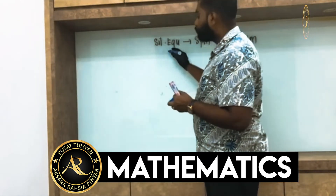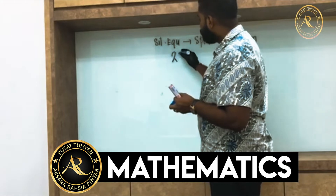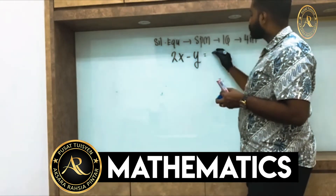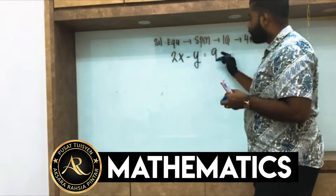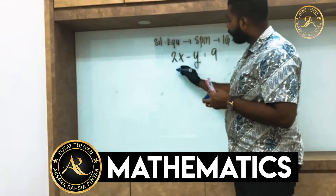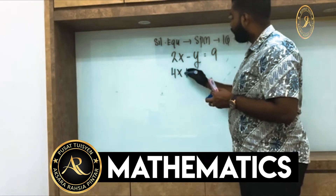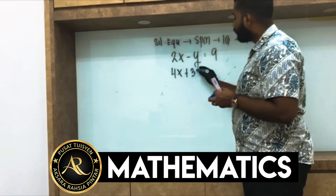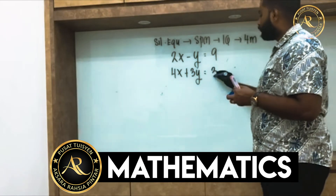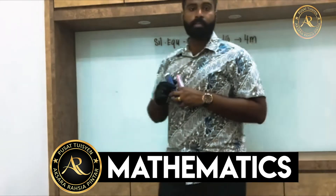Now let me write down the question. First equation: 2x minus y equals 9. Second equation: 4x plus 3y equals 3.